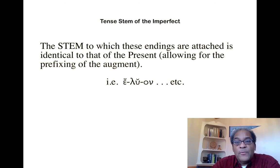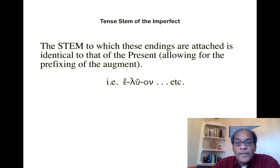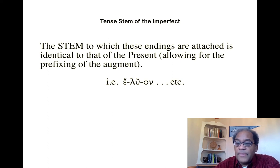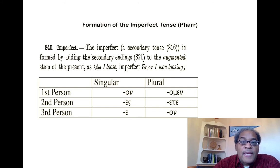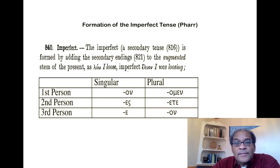The stem to which the endings of the imperfect are attached is, in the imperfect, identical with that of the present. So if we look at the first person singular of luo in the imperfect, we see lambda-epsilon — the same stem as in the present — but with, on the one hand, the augment, and on the other hand, the secondary personal endings. The imperfect, as Farr explains in H40, is formed by adding the secondary endings to the augmented stem of the present: luo 'I loose' becomes eluon 'I was loosing.'